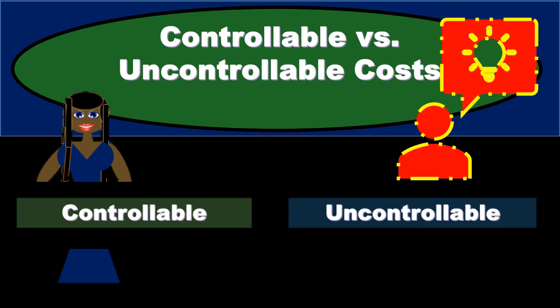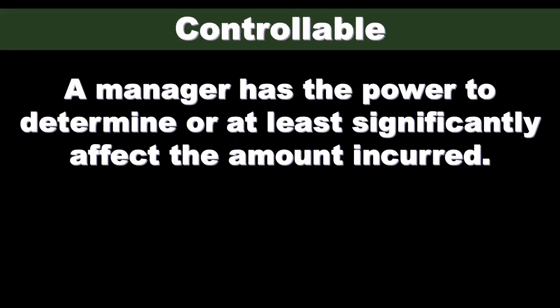In this presentation we will discuss controllable versus uncontrollable costs. When considering controllable and uncontrollable costs we're imagining our responsibility accounting system. We have our organization which we're breaking up — we're decentralizing, giving responsibility to different managers of different segments. We can use the tool of controllable and uncontrollable costs to measure performance for different areas and units of our responsibility accounting organization.